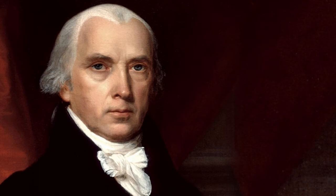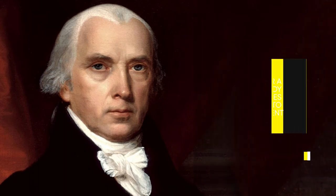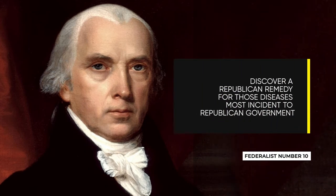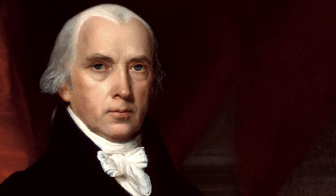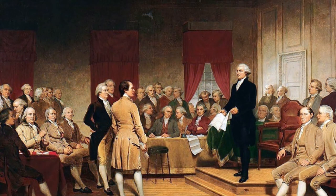James Madison would write later on in Federalist Number 10 that the Founders needed to discover a Republican remedy for those diseases most incident to Republican government. What he meant was that government had to be structured so that it could contain the will of the people, even though it was based on the will of the people. Support grew among the elites of society for a constitutional convention to fix what they saw as the problems with the Articles of Confederation.